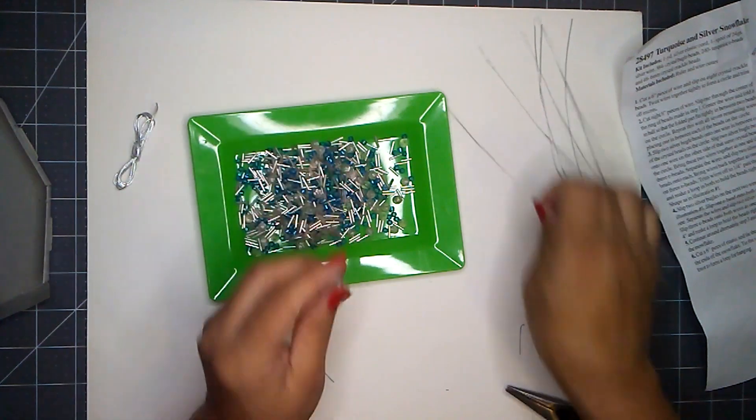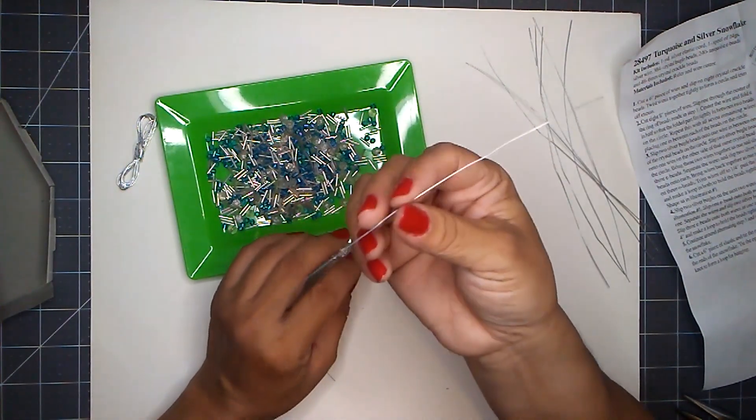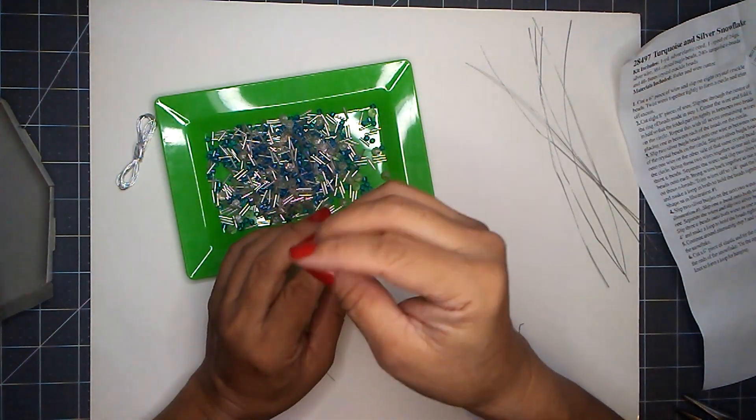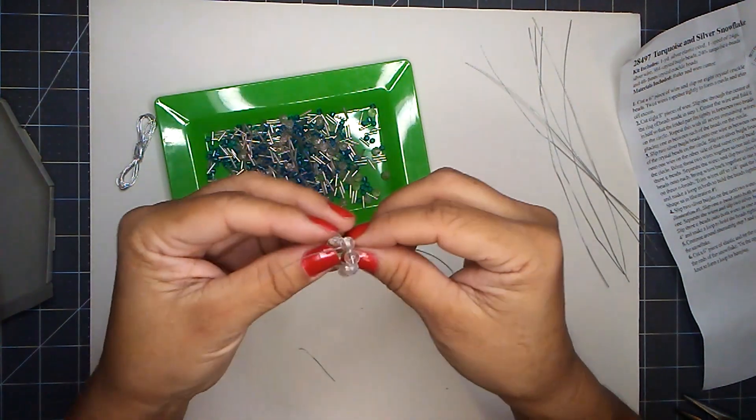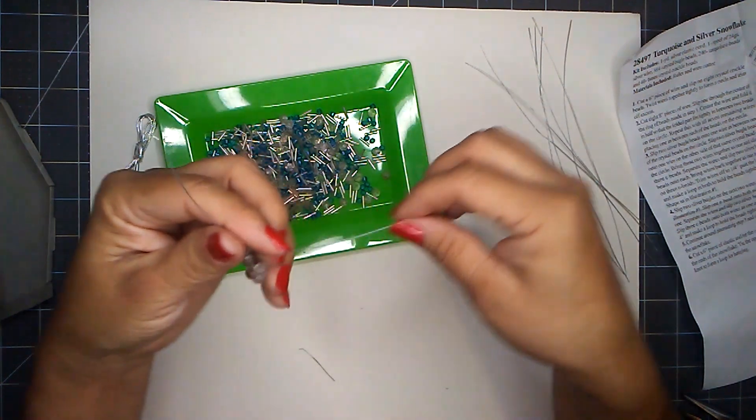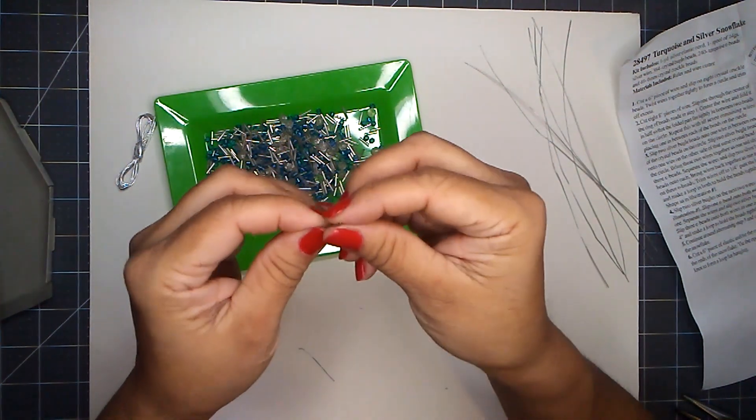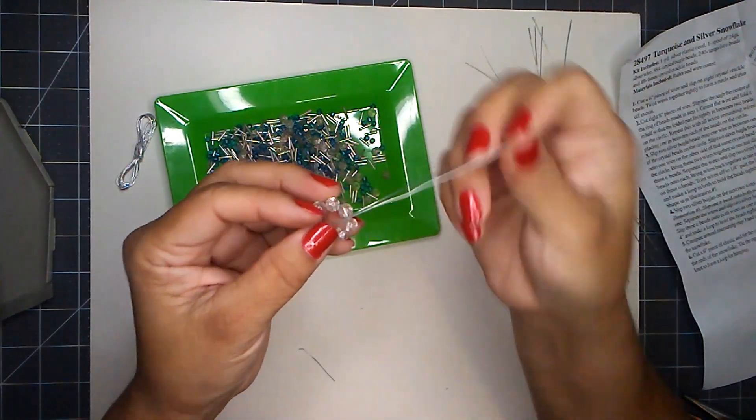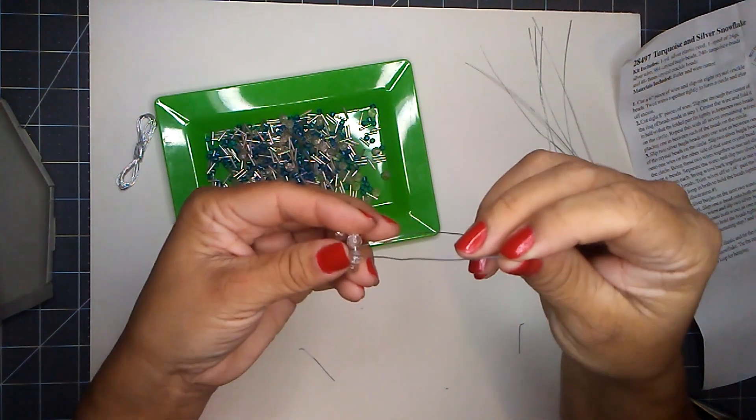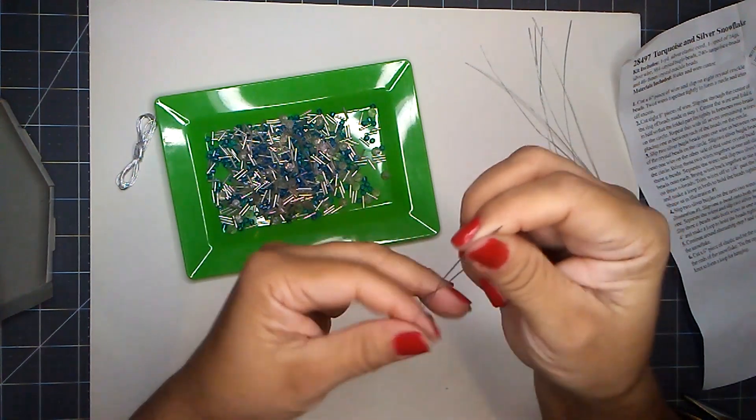There we go. Now it says to take, of course you cut eight of these eight pieces of wire here, slip one through the center of the beads and fold it in half so the folded part fits snugly between two beads. See there, just take that and drop it between the two beads and then just kind of find your center there.